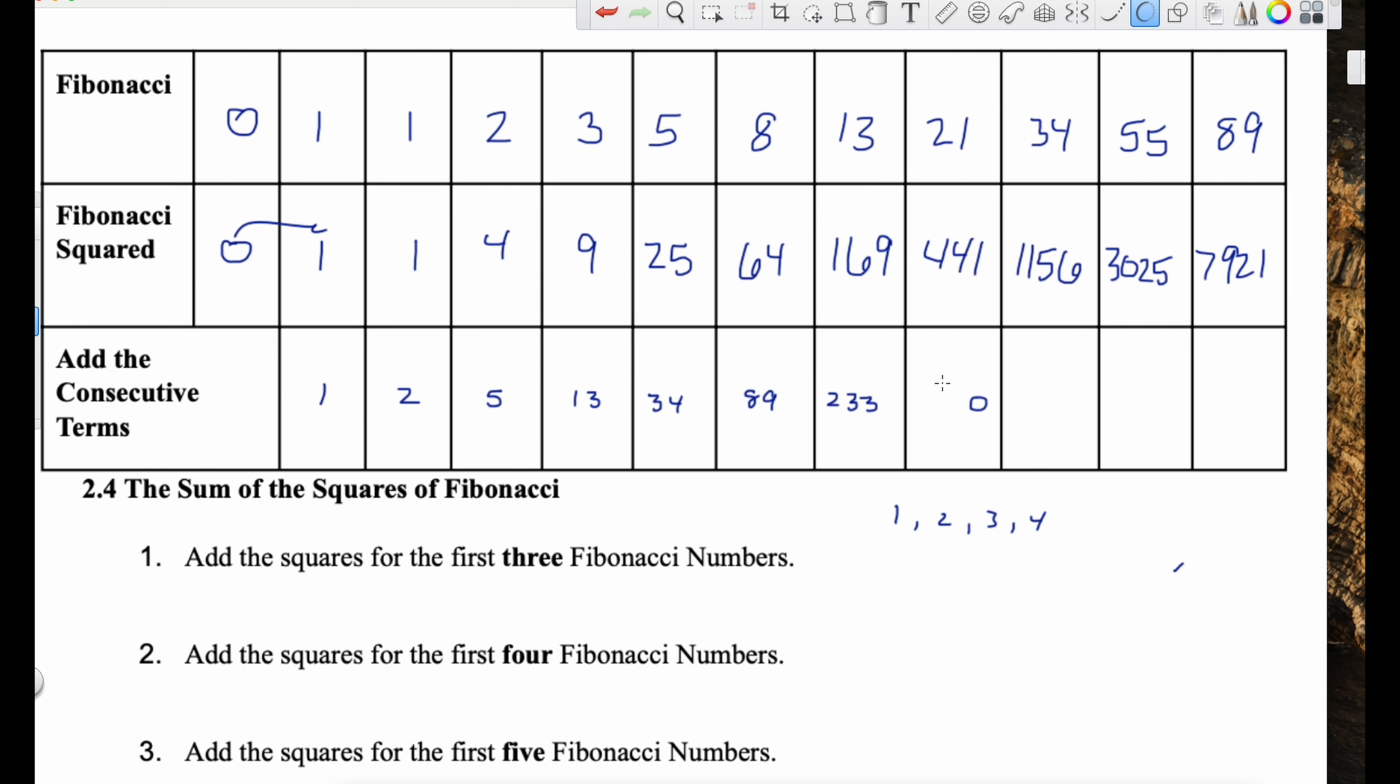Add the squares for the first three Fibonacci numbers. Add the squares for the first four, five, six, and seven. And then what's interesting about it? So I already have this table above. And that's done on purpose. So let's see if that can help us.